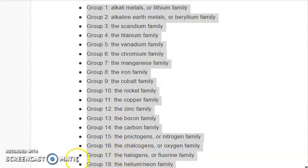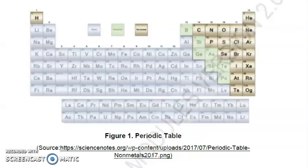Group sixteen - the chalcogens or oxygen family. Then group seventeen - the halogens. And for group eighteen - the helium or neon family. You may just mention their name like helium without mentioning the family when you answer your activity.